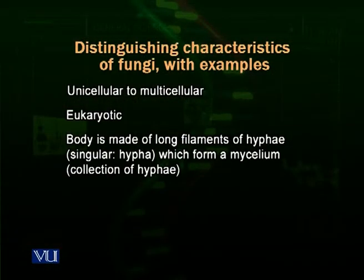Fungi are categorized into a separate kingdom. We know that organisms on Earth are classified into five kingdoms, and fungi make up a kingdom of their own called Kingdom Fungi. Multicellular fungi have a filamentous body. These filaments are typically called hyphae. When a group of hyphae are present together in an area — whether in soil, in an organ, or in the root of a plant — the collection of hyphae is called mycelium, which makes up the body of the fungus.